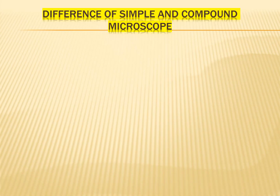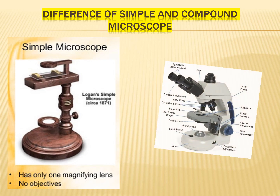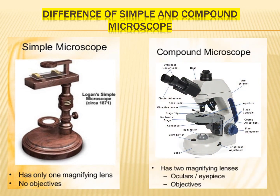Difference between simple and compound microscope: A simple microscope has only one magnifying lens and no objective lenses. A compound microscope has two magnifying lenses — the ocular or eyepiece lens and the objective lenses.